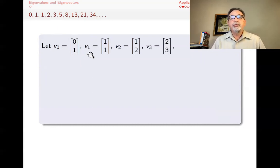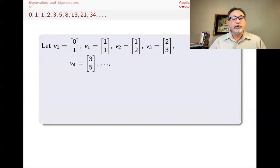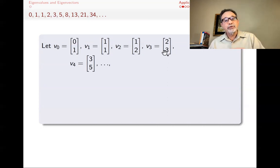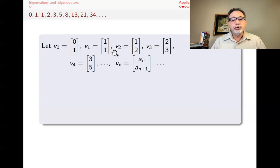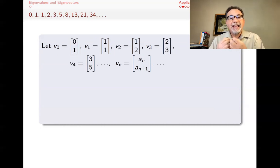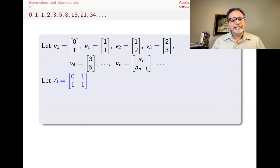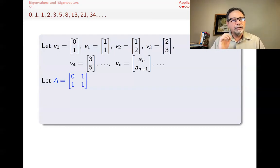So V3 will be (2, 3), V4 will be (3, 5). Note that any element in the sequence appears in two consecutive vectors — for example, 3 is the second entry of V3 and the first entry of V4. So Vn is the column vector containing the nth and (n+1)th Pingala-Fibonacci numbers. Then I notice that the matrix A = [[0,1],[1,1]] has some relevance here.